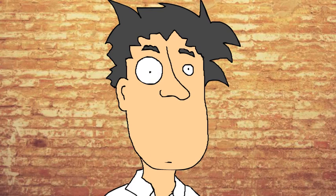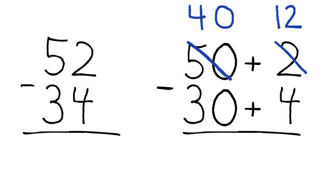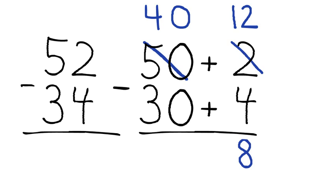We can subtract. 12 minus 4 is 8. 40 minus 30 becomes 10. Then we add from left to right and boom! There you have it! The answer is 18.